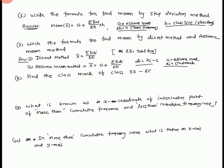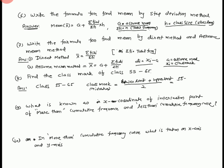Question number 8: Find the class mark of the class 55 to 65. Class mark means mid value. Class mark equal to (lower limit plus upper limit) upon 2, equal to (55 plus 65) upon 2, equal to 120 upon 2, equal to 60. So class mark is equal to 60.